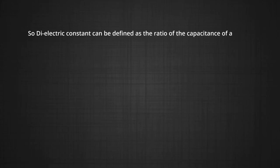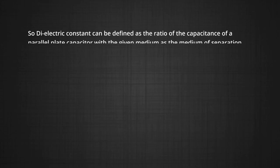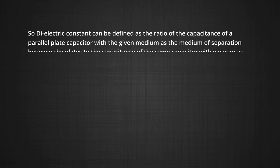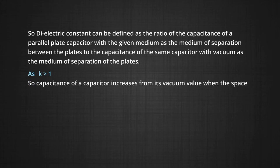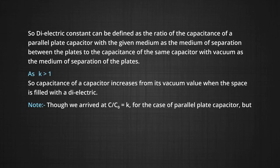So, the dielectric constant can be defined as the ratio of the capacitance of a parallel plate capacitor with the given medium to its vacuum value. As K is more than 1, the capacitance of a capacitor increases from its vacuum value when the space is filled with a dielectric. Note that though we arrived at C by C₀ equals K for the case of a parallel plate capacitor, it holds good for any type of capacitor.